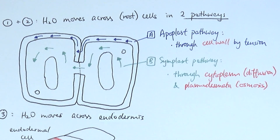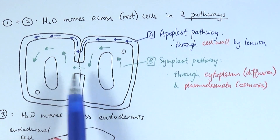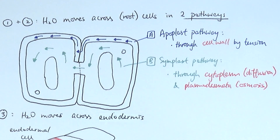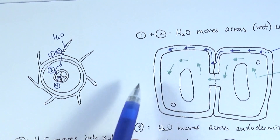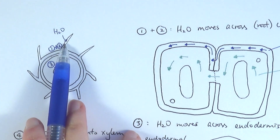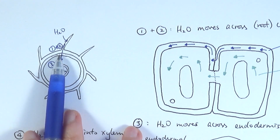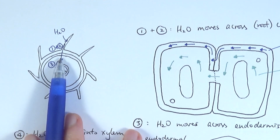So those are the two main pathways that water uses to move across cells. There is actually one other pathway not mentioned in the book, called the vacuolar pathway, which involves water moving from one vacuole to the next. But that is not as commonly used, so we don't need to worry too much about it. Now imagine the water is using these two pathways to move from the root hair cells across the exodermis, epidermis, and cortex, coming close to the endodermis.